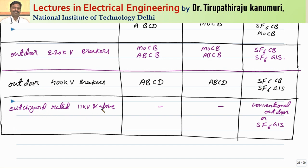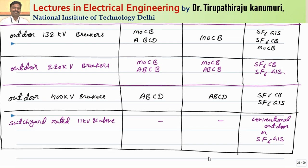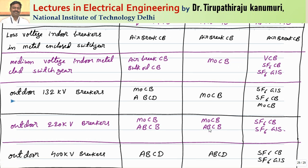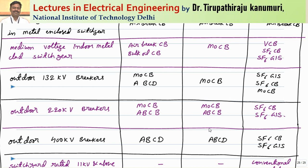For switch yards rated 11 kV and above, they can be either conventional outdoor type substations or nowadays gas insulated substations using SF6. By using SF6 GIS, the size of the substation decreases drastically because the clearance required between parts decreases significantly. To summarize: the current trend is to use air brake circuit breakers only for low voltages, and for medium or high voltages, vacuum or SF6 circuit breakers are used. In very few applications, minimum oil circuit breakers are used where frequent operations are not required.